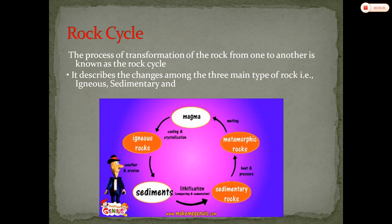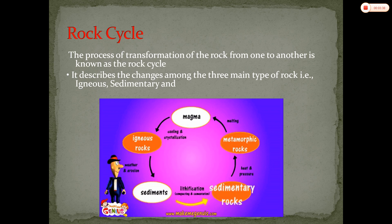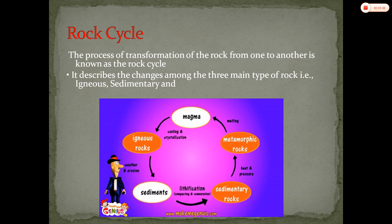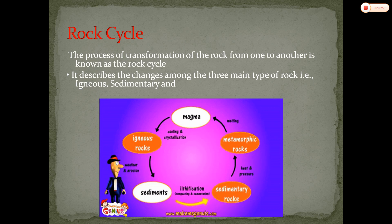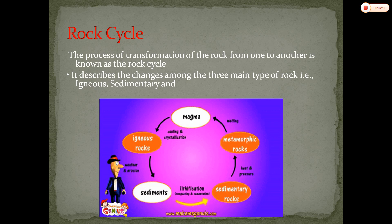The next point we are going to see is the rock cycle. The rock cycle is the process of transformation of rock from one type to another. Magma converts into igneous rock, igneous rock converts into sediments, and both igneous and sediments convert into metamorphic rocks, and then back to magma again. This complete process is called the rock cycle — it describes the changes among the three main types of rocks: igneous, sedimentary, and metamorphic.